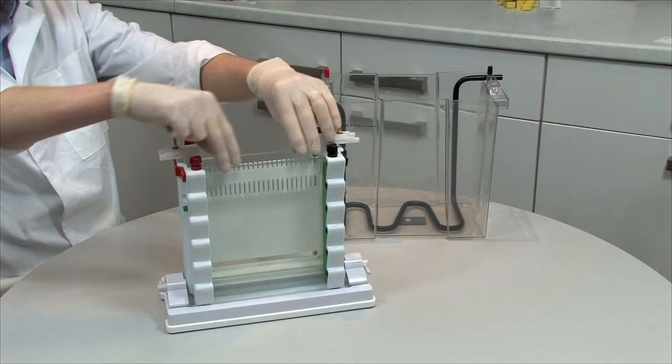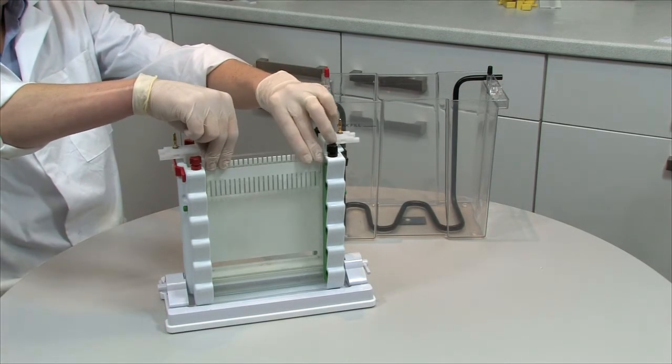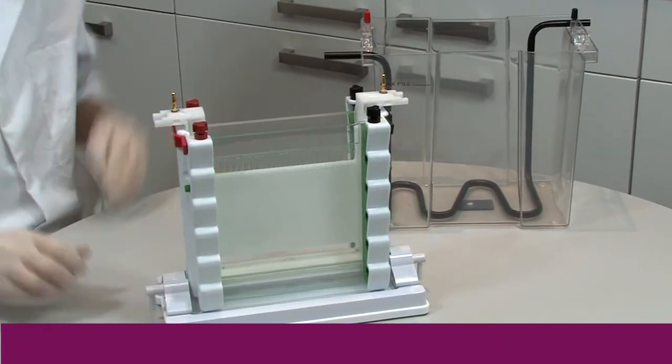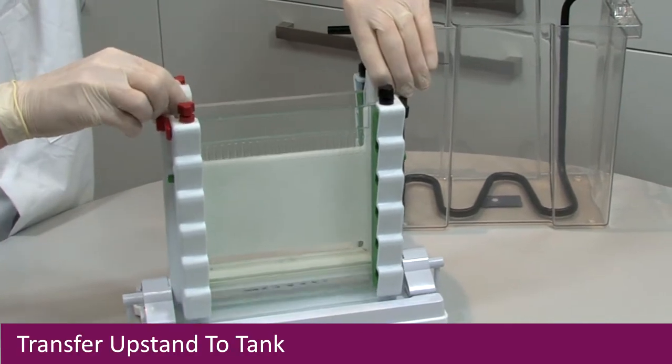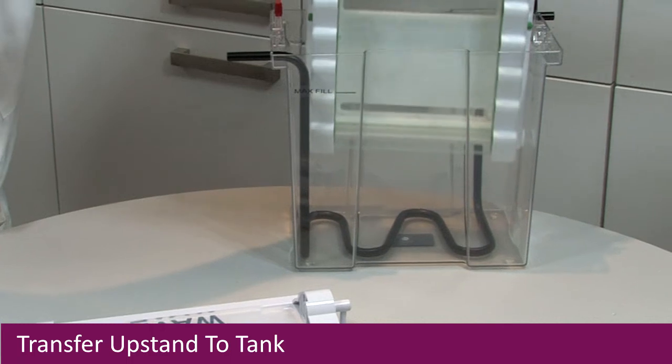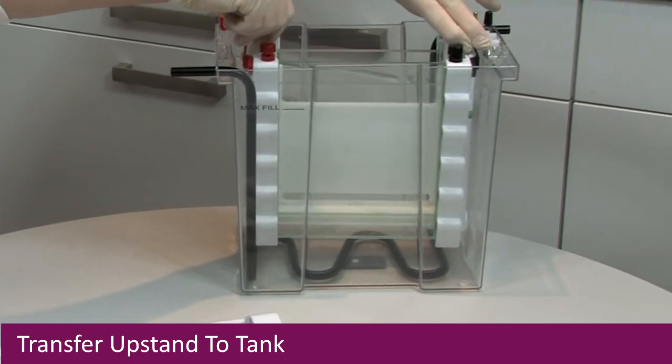Remove the combs from the polymerized gels. Align colour coded screws with red and black thumb locators in the tank. If connecting to a chiller, make sure that the cooling coil is in situ before inserting the upstand.